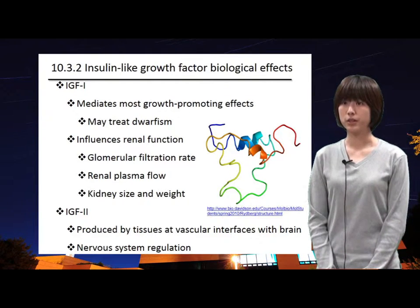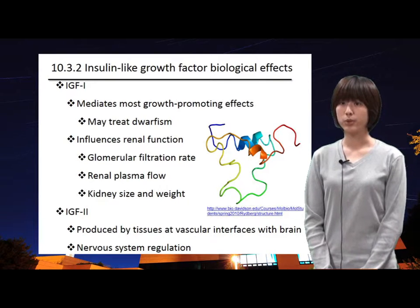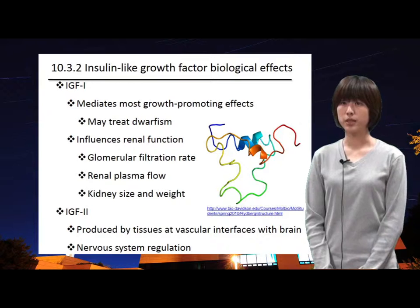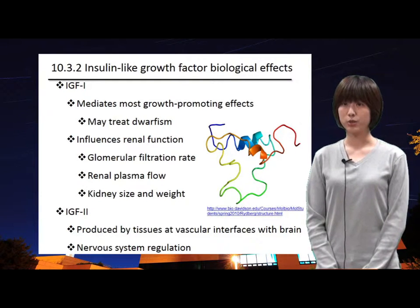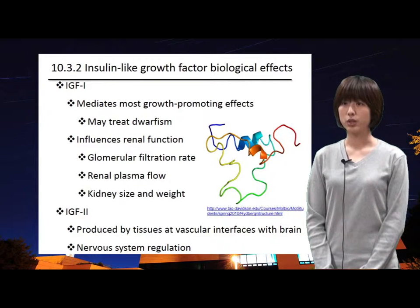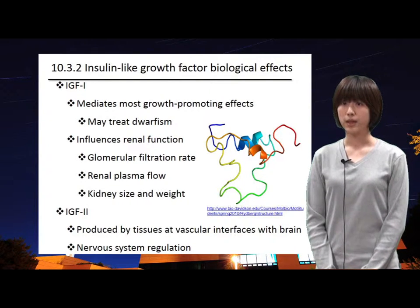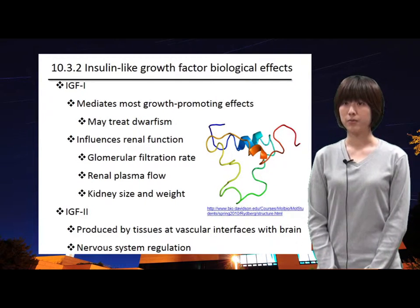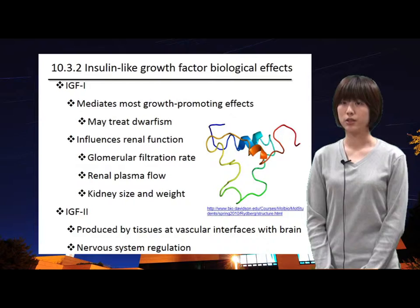IGF-1 also regulates renal functions. Injection of IGF-1 promotes increases in glomerular filtration rate, renal plasma flow, and kidney size and weight, making it a potential therapeutic agent for treating various forms of kidney disease. IGF-2 is produced mainly by tissue and vascular interfaces with the brain. Both IGF-1 and IGF-2, along with insulin, play important roles in the nervous system — they stimulate the growth and development of various neuronal populations and promote neurotrophic effects, and may be of potential use in treating various neurodegenerative diseases.